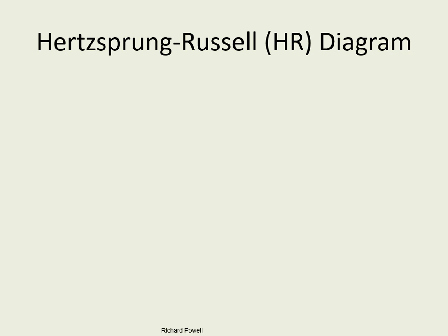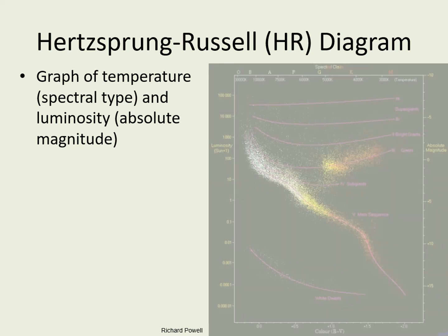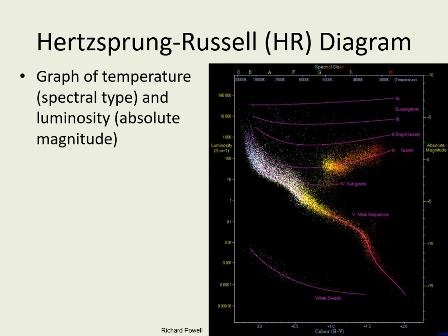One of the favorite tricks in science is to make a graph of two different quantities and see if you can find any connections between them. In the early 20th century, two astronomers — Einar Hertzsprung and Henry Norris Russell — put together graphs of absolute magnitudes versus colors. Remember that absolute magnitude tells us the luminosity, and color tells us the surface temperature. The diagram they produced is still called the HR diagram, and if you know where a star goes on this diagram, you can tell a tremendous amount about it.